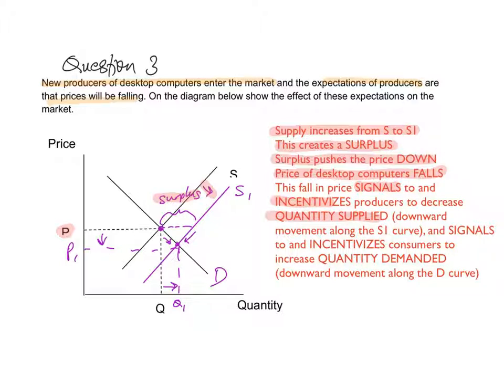This fall in price will signal to and incentivize producers to decrease quantity supplied, shown as a downward movement along the S1 curve — I'm highlighting the arrow here. It will also signal and incentivize consumers to increase quantity demanded. There's a surplus, so we want to incentivize consumers to purchase more, to increase their quantity demanded. This is shown as a downward movement along the demand curve.